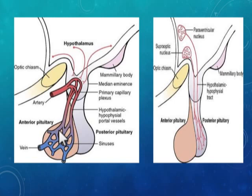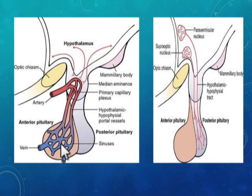A portal system arises from one capillary bed and ends in another capillary bed before returning to the heart. There are three types of circulation in our body: systemic, pulmonary, and portal. Portal circulation is found in two sites — the hepatic portal system and the hypophysial portal system. This is why we call it portal: it begins from one set of capillaries and ends in another set of capillaries. The hypothalamus is connected with the anterior pituitary by the hypothalamo-hypophysial portal vessels.